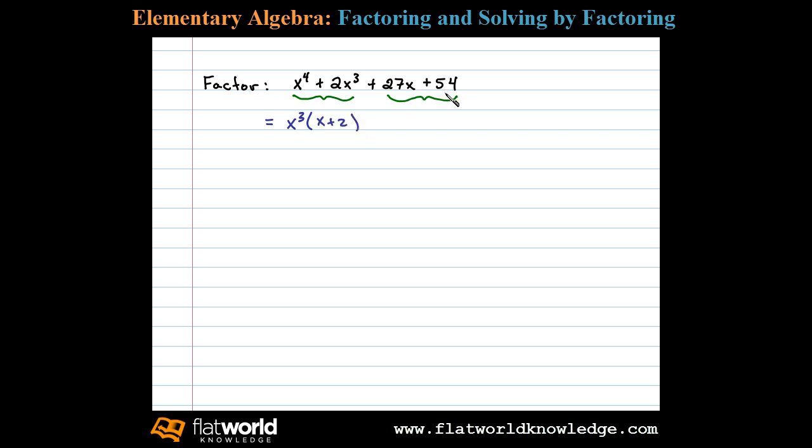Now the GCF of the second two terms is 27. Factoring out 27, we're left with x plus 2 as well.